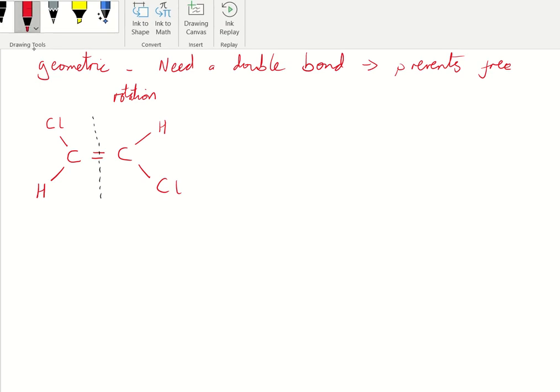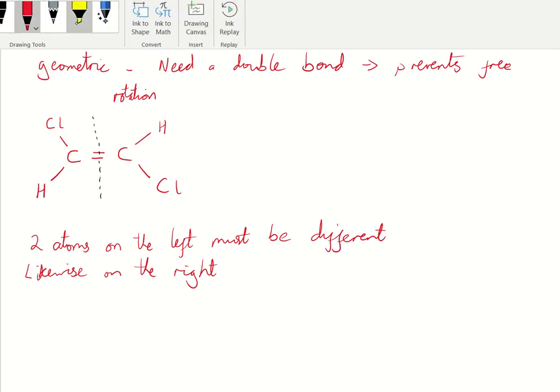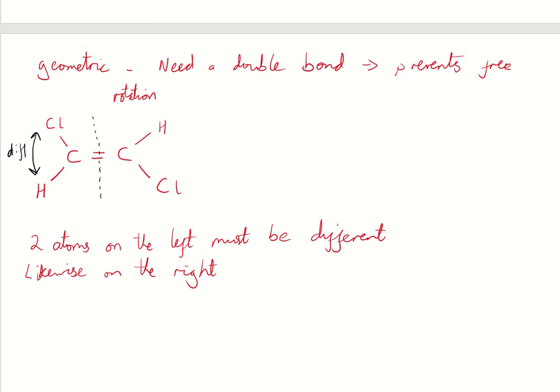Now, the other thing we need is two atoms on the left, or groups rather if they are bigger going off, but in my case just the atoms here. They must be different, and likewise on the right. So there's two criteria there, the double bond, and the atoms on the left must be different. So the chlorine, as we can see, is different to the hydrogen. So these are different, and it does not matter at all about across the double bond. So I would simply look on the other side as well. These are different too.